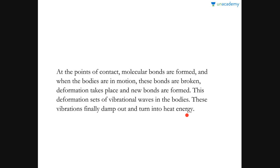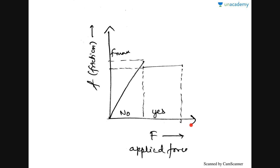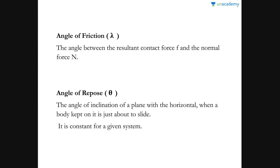If you see this graph, the x-axis has the applied force and the y-axis has the frictional force. In the region marked 'No,' relative motion does not occur; in the region marked 'Yes,' relative motion occurs. F-max is the limiting friction. This part of the graph represents static friction. Beyond static friction, relative motion occurs because up until the static friction limit there is no slipping, and if there is no slipping there is no relative motion.